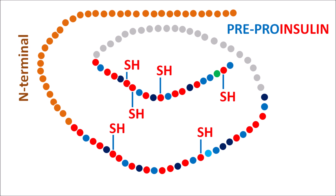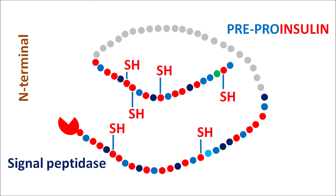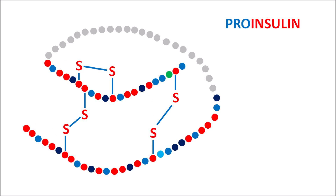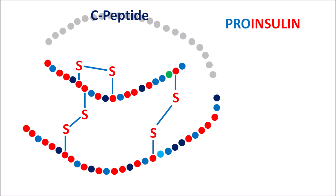In the structure of pre-pro-insulin, the N-terminal is removed by signal transpeptidases, converting pre-pro-insulin into pro-insulin. Pro-insulin still has the C-peptide chain, which is required for the formation of disulfide bridges. In pro-insulin, disulfide bridges are formed in the presence of C-peptide, but this C-peptide is not required for the final insulin structure. Another group of enzymes, endopeptidases, cleave the C-peptide at both attachment points.